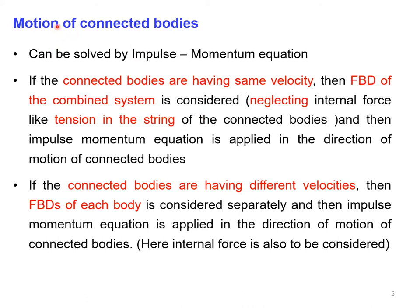For motion of connected bodies, the system consists of more than two bodies connected by cables, strings, cords, or pulleys. We can use impulse-momentum equations to solve these problems. If the connected bodies have the same velocity, we consider the free body diagram of the combined system, where internal forces like tension cancel each other, and apply the impulse-momentum equation in the direction of motion.